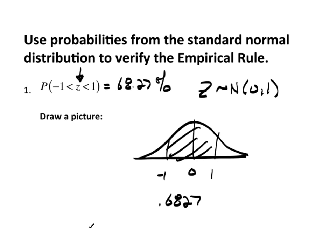That 68.27% is already rounded at two decimal places. If I go out further, it would be 68.27-something — it could go on and on.